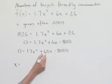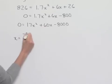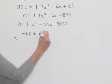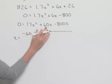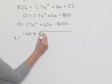We'll have x equals negative B, which will be negative 60, plus or minus the square root of B squared, and 60 squared is 3,600.